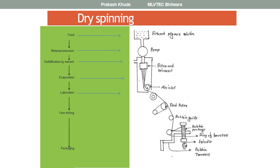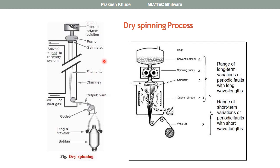We will now look at the different components of dry spinning systems and what is the basic difference between melt spinning and dry spinning. Here we can see how the solvent is recovered. The filtered polymer solution is pumped through the spin pack assembly, which comprises the filter unit and spinneret.